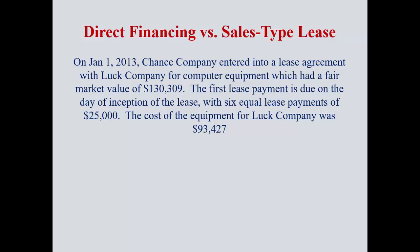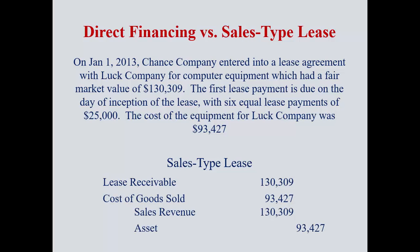Now let's look at another example. Chance Company entered into a lease agreement with Luck Company — the only difference is the cost of the equipment for Luck Company, the lessor, was $93,427, while they leased it for $133,309. This is a sales type lease. The journal entry looks different: lease receivable, cost of goods sold, and sales revenue of $133,309 — sales revenue is a credit. Note: the $133,309 should be tabbed to the right; it's just a glitch in the PowerPoint.